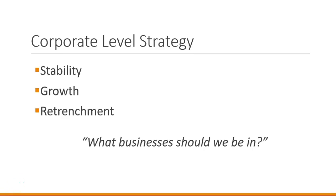Now let's look at corporate level strategy. At the corporate level, we're asking the question: what businesses should we be in? We have three options: stability, growth, and retrenchment. Stability means aiming to maintain the current level of activity while maximizing profit and continuing to be successful. Growth and retrenchment are two other options we'll look at in more detail next.